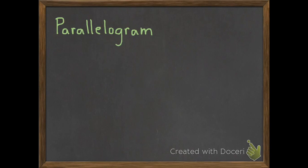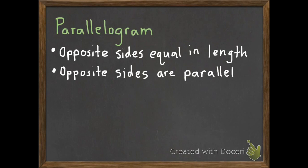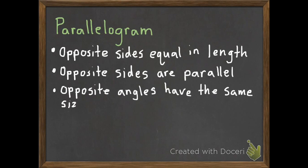The first kind of quadrilateral we're going to learn about is a parallelogram. To be a parallelogram, our shape needs to have opposite sides equal in length, opposite sides are parallel, and opposite angles have the same size. Make sure you write all three of those things down. You can either pause it or I'm going to start drawing a couple of examples.